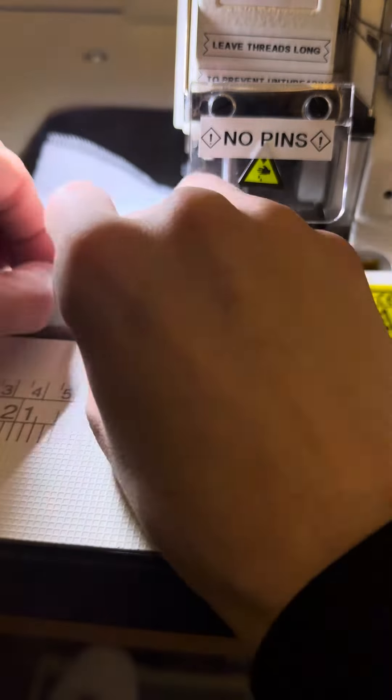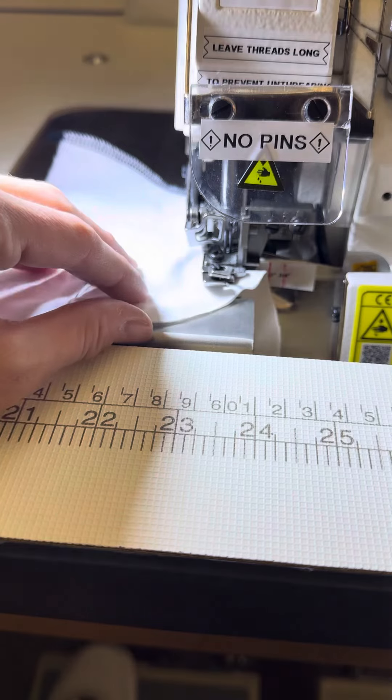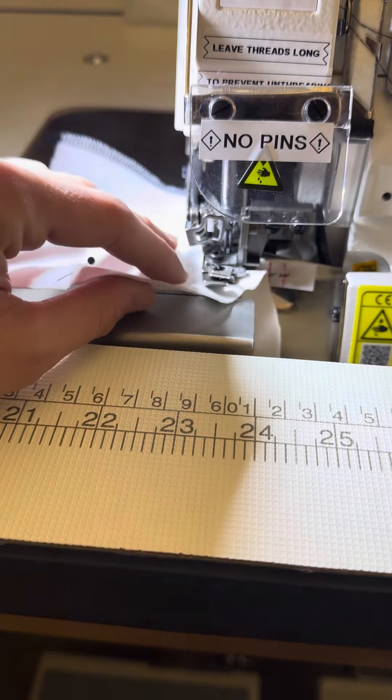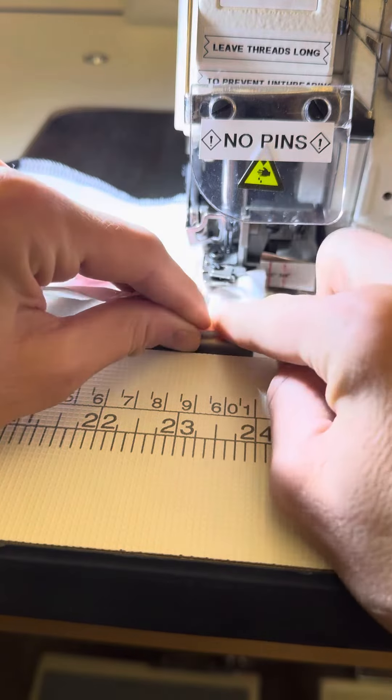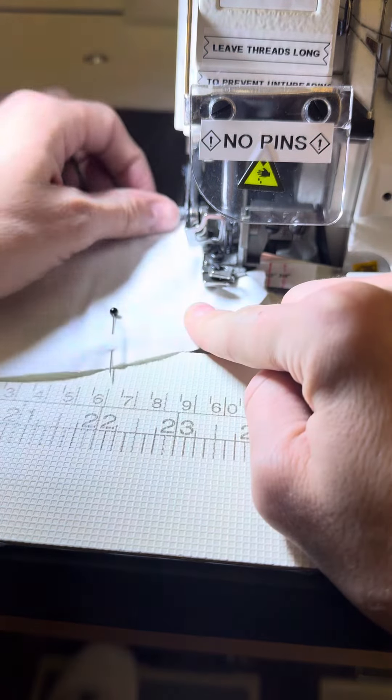If you go to a point where you're like, 'Oh shoot, I didn't turn enough there,' pick up your presser foot and just pull the fabric slightly. That can help you continue on with that curved part.